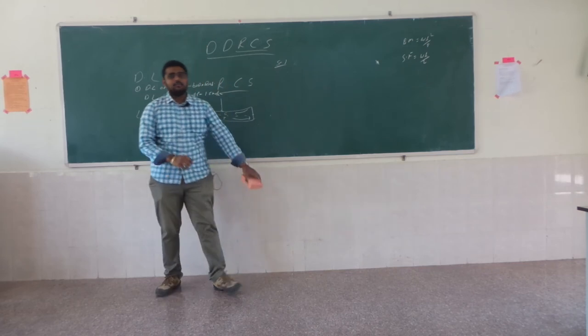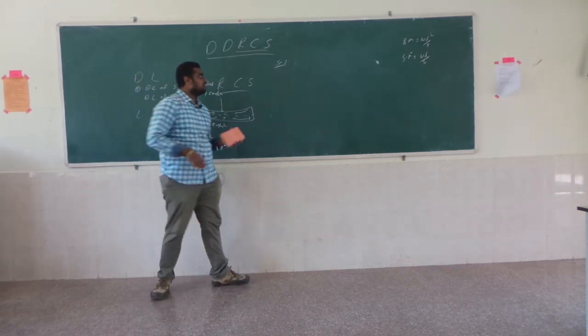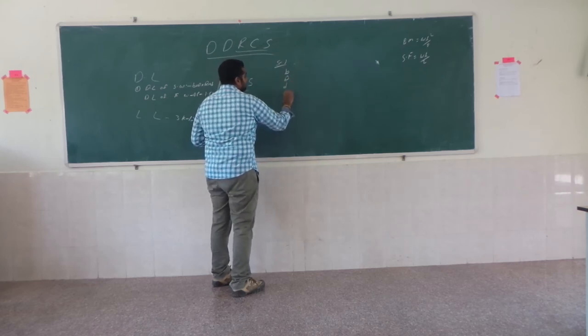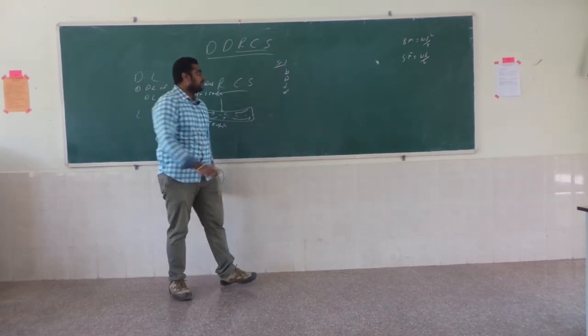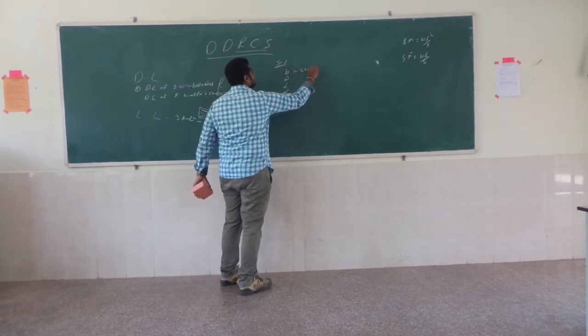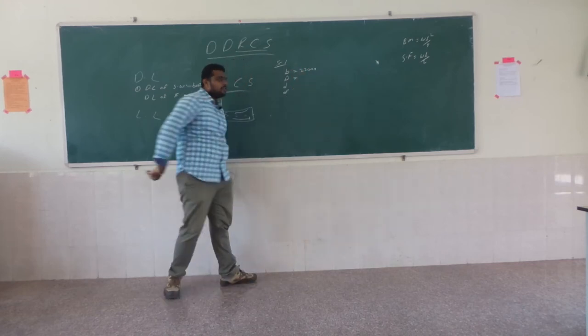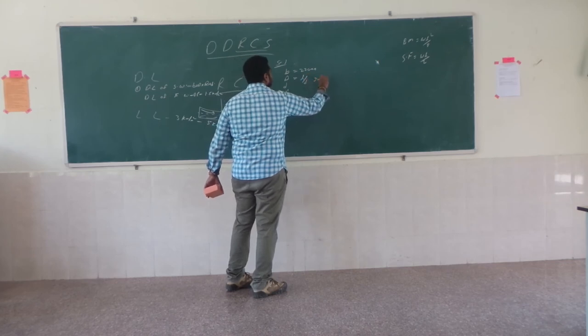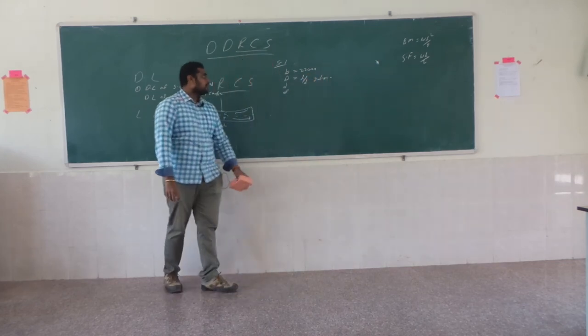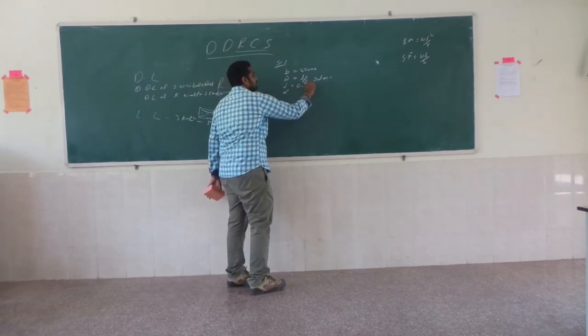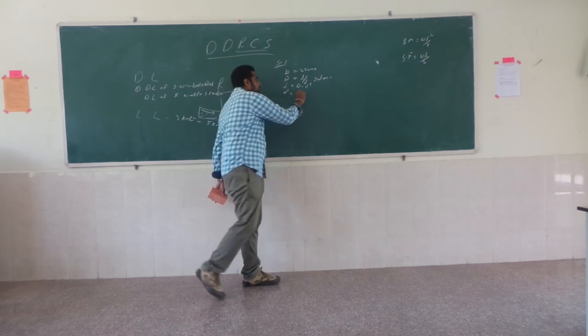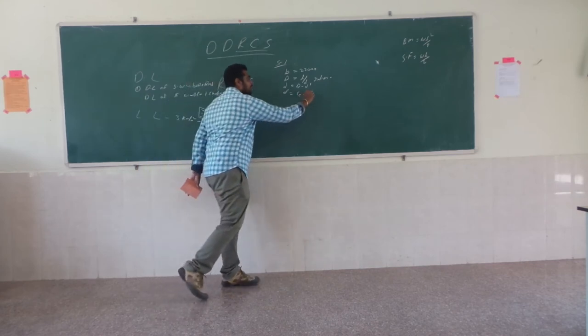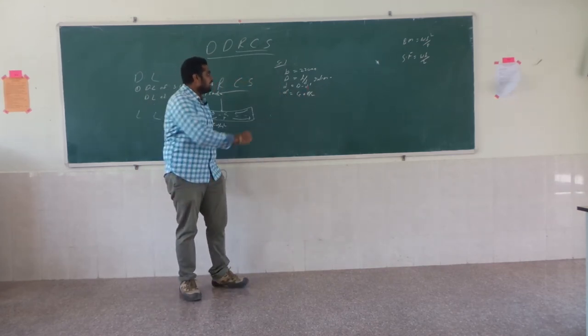Coming to the procedure, step one always takes the dimensions. Dimensions include breadth, depth, effective depth, and effective cover. For the breadth, it is always assumed as 9 inches or 230 mm, whereas for depth it varies based on your l/d ratio, which is taken from your code book. And effective depth is nothing but d minus d-dash, where d-dash is equal to clear cover plus diameter of the bar by 2 at tension.